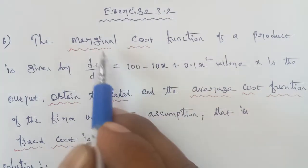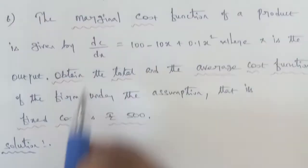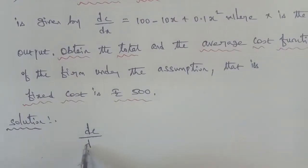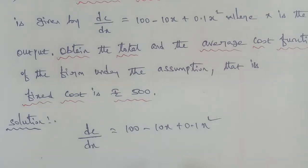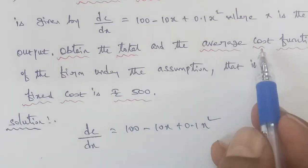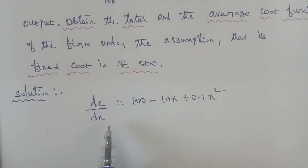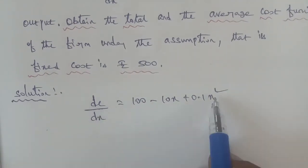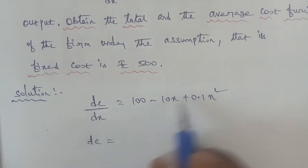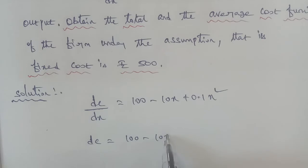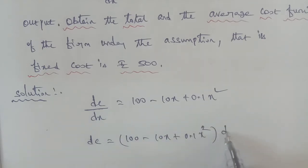The marginal cost is dc/dx. The solution: dc/dx is equal to 100 - 10x + 0.1x². We need to find the total cost and average cost. Separating variables and arranging: the dc term equals (100 - 10x + 0.1x²) dx. So we separate the dc term and the dx term.